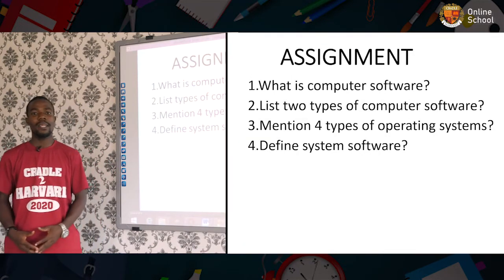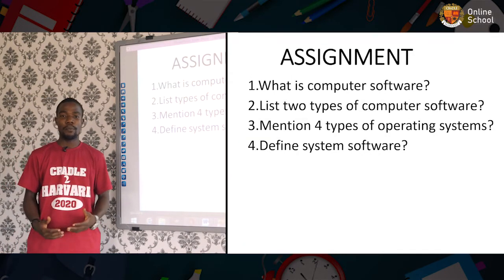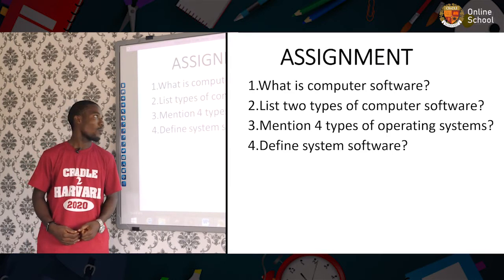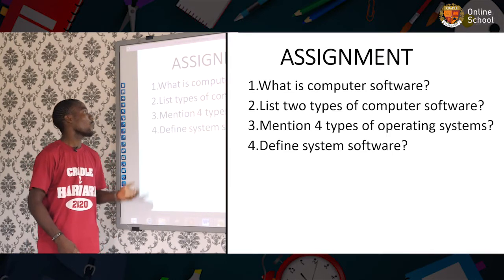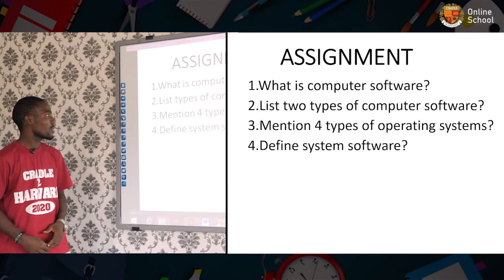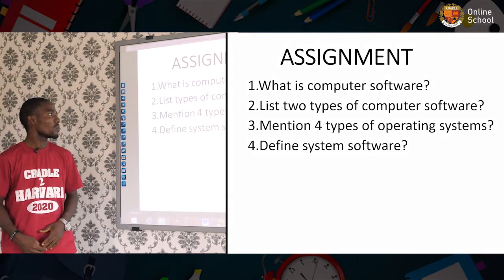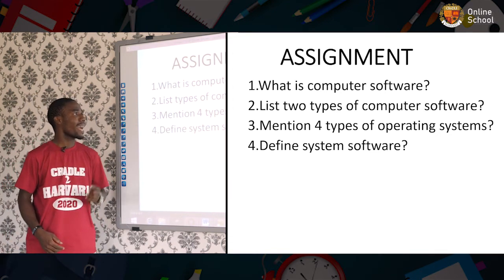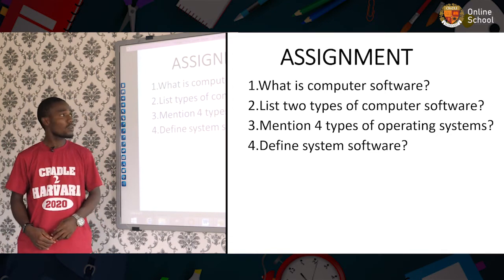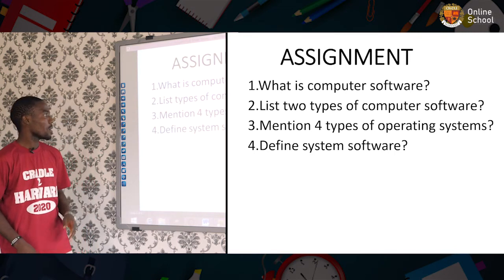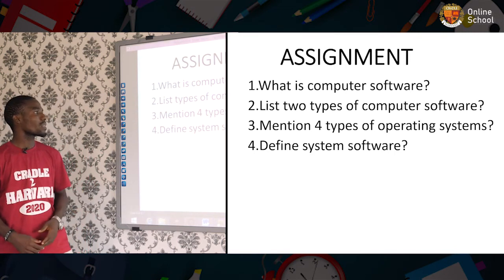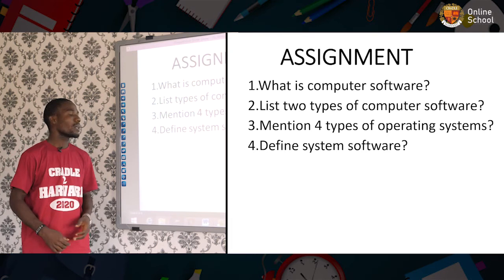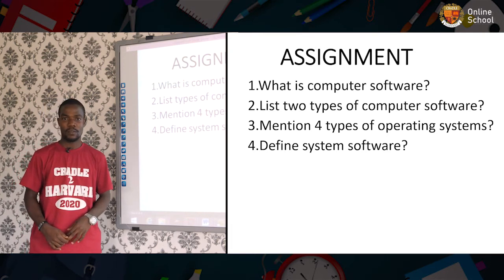I will leave you with this assignment. One, what is computer software? Two, list two types of software. Three, mention four types of operating system. Four, define system software.